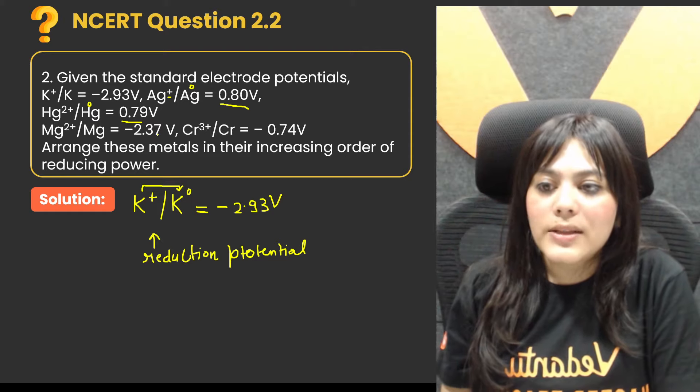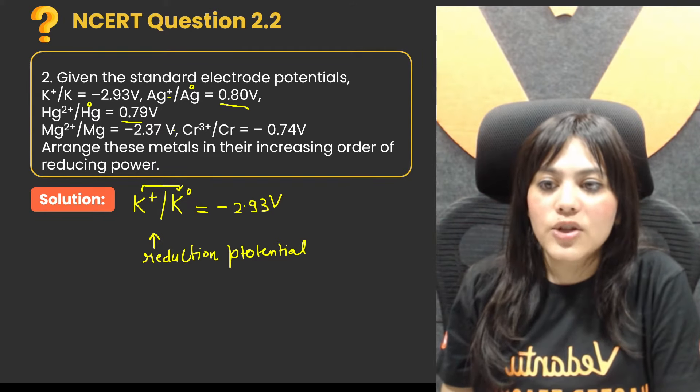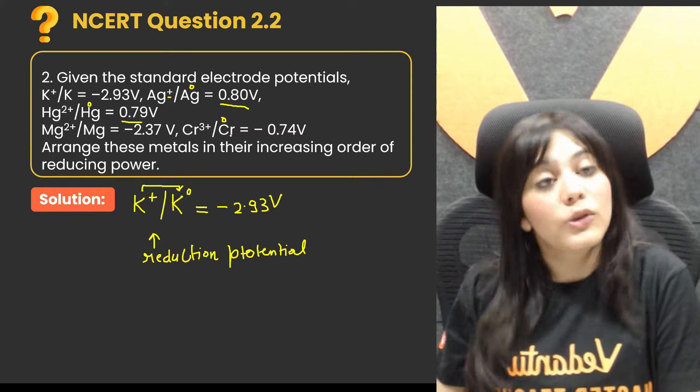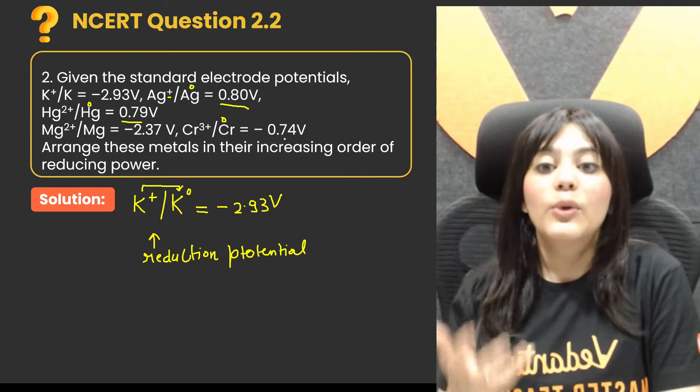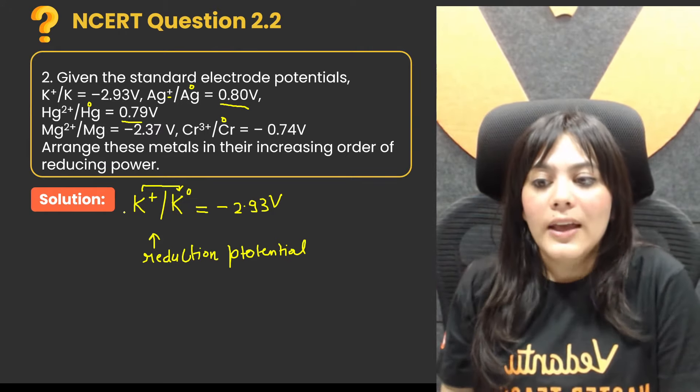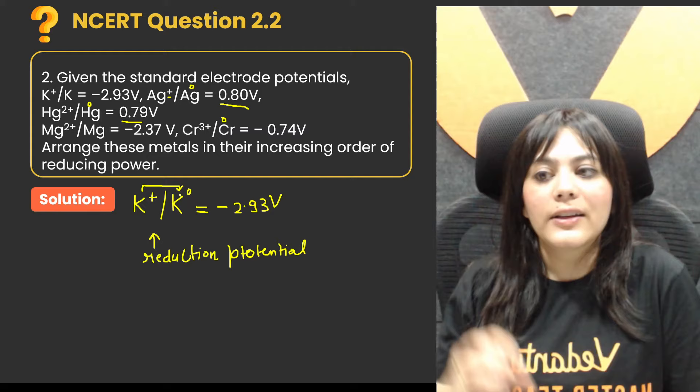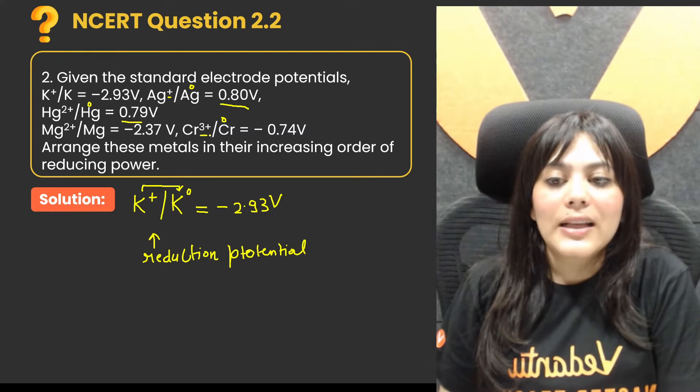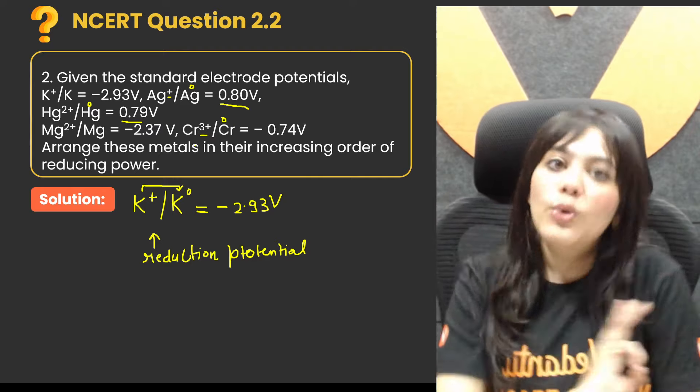Here is the same way. Mg2+/Mg, there is also the reduction potential. Here is the Mg2+/Mg, there is reduction potential. And then Cr3+/Cr, when you go to zero state, it means reduced, so reduction potential.